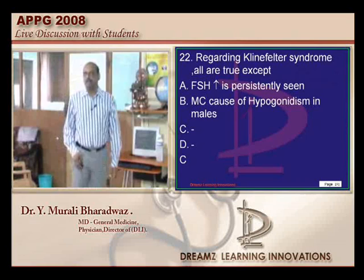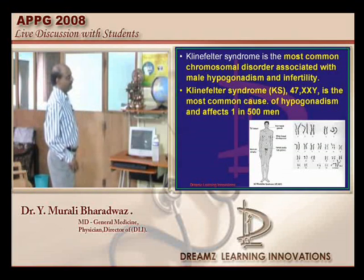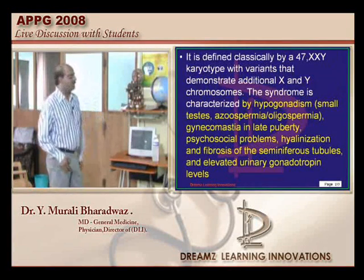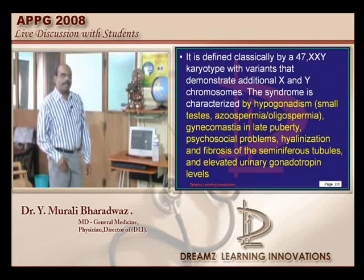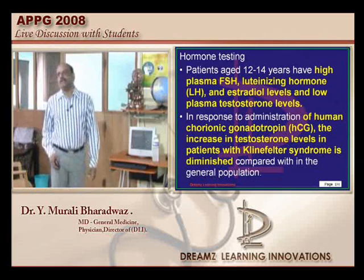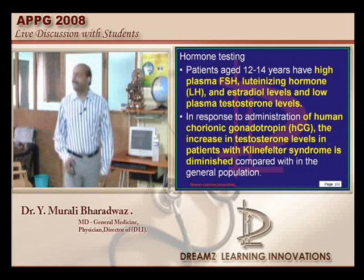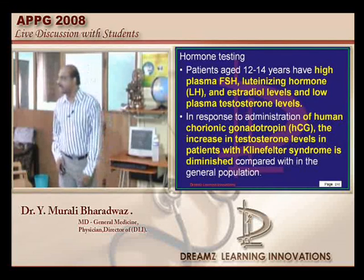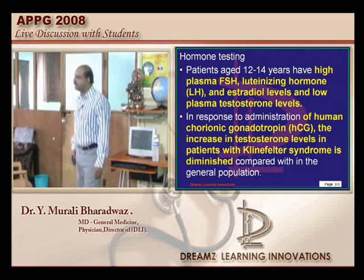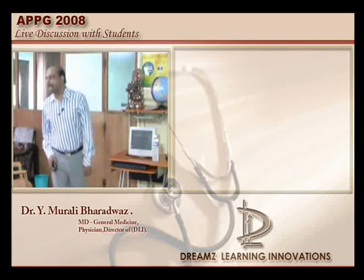Let us talk about Klinefelter's syndrome. Klinefelter's is undoubtedly the most common cause of hypogonadism in males. What else will happen? Klinefelter's leads to hypogonadism because the testes are abnormal — Sertoli cells are damaged — and there is gynecomastia, hyalinization of the seminiferous tubules, elevated gonadotropin levels, high plasma FSH and LH and estradiol, but low plasma testosterone. Mental retardation was also one of the options given, but that is not the correct answer.